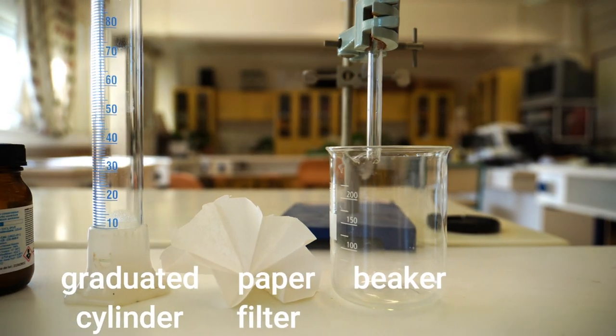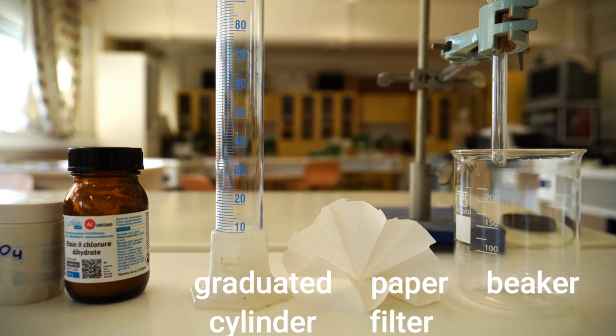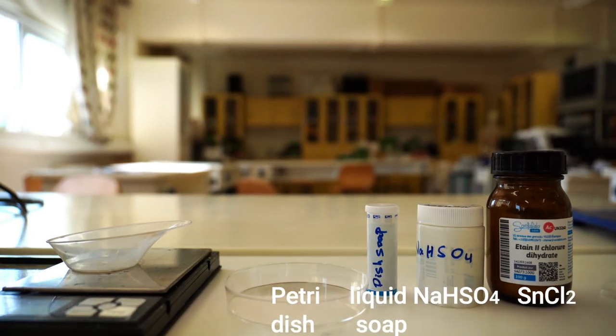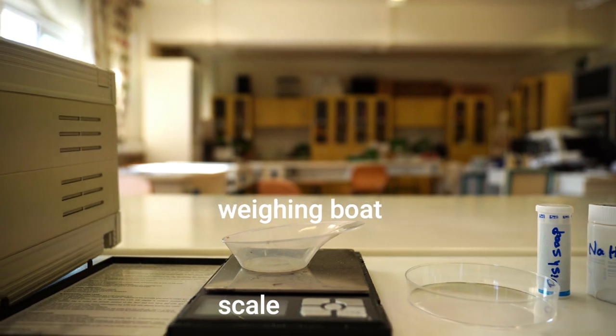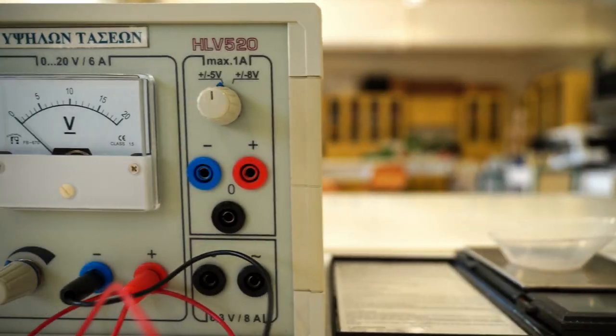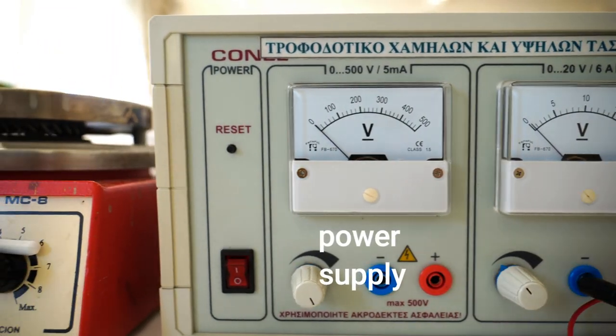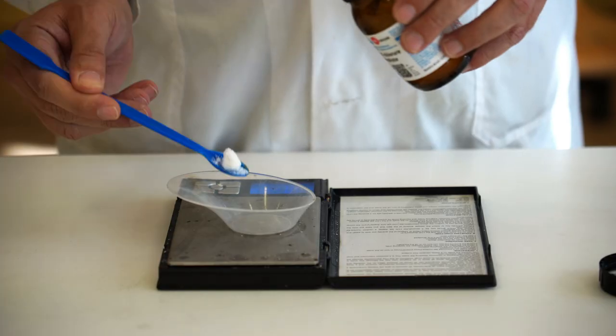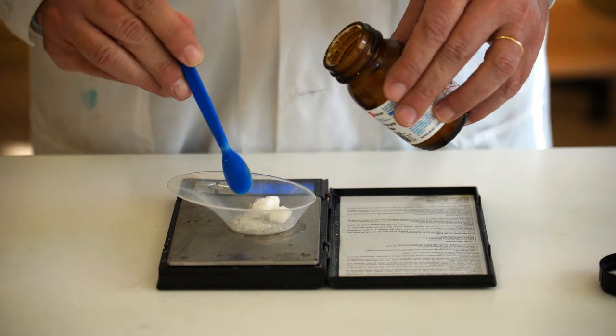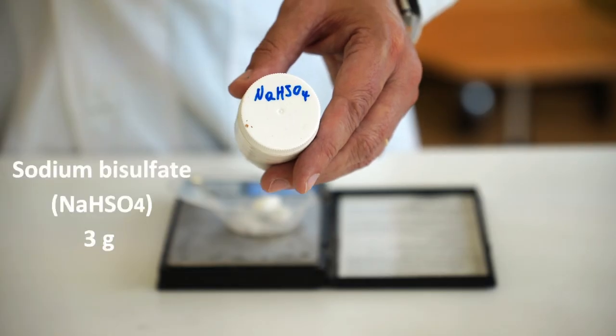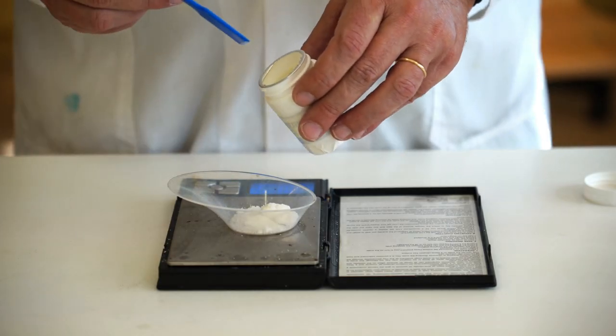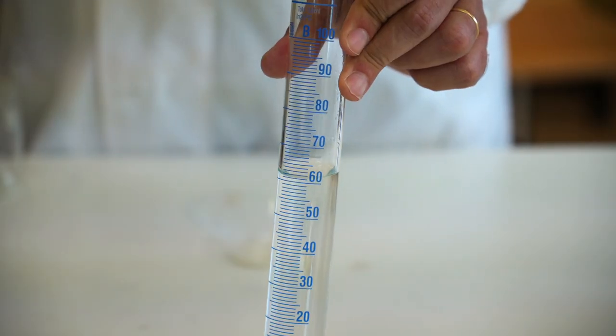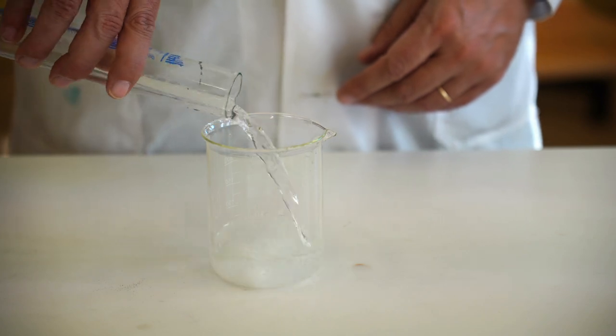These are the materials that we need to perform the experiment. We weigh 6 grams of tin chloride, 3 grams of sodium hydrogen sulfate and dissolve them in 62 milliliters of water.